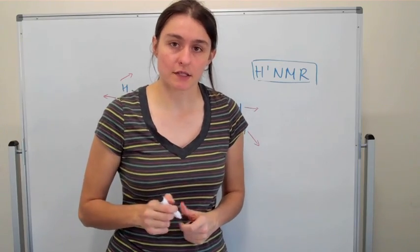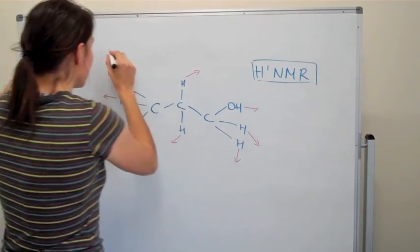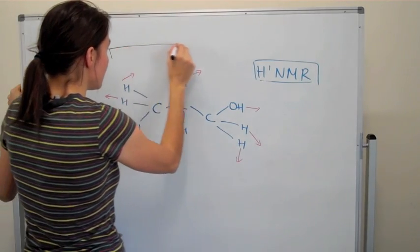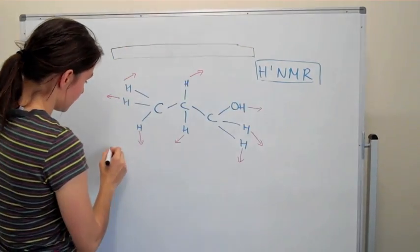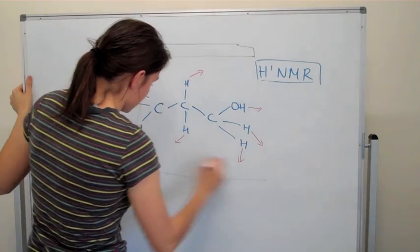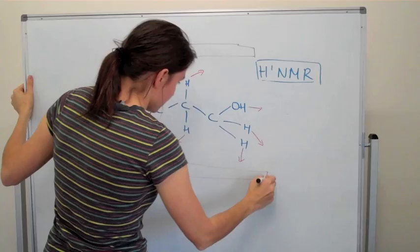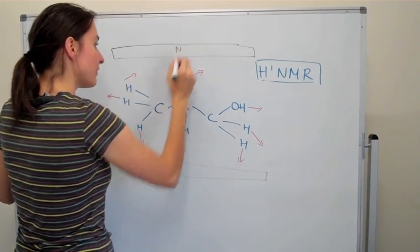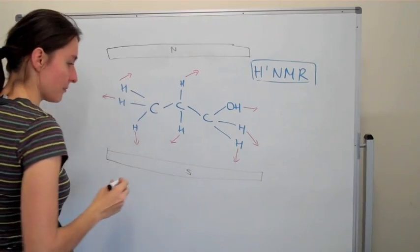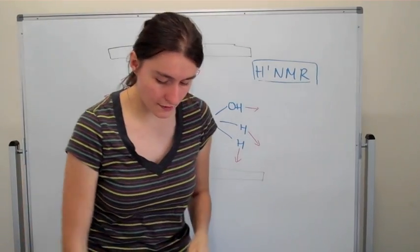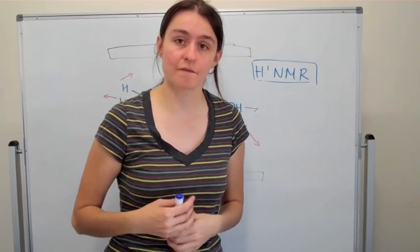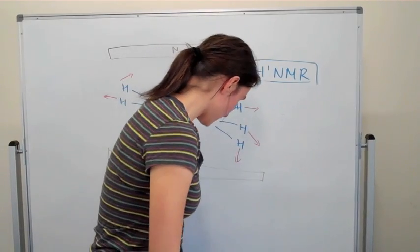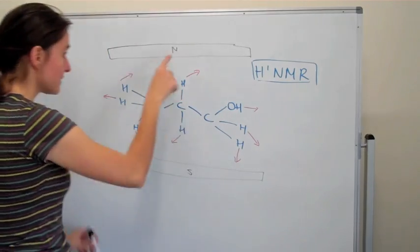So in NMR we take advantage of this. We place in a magnet, an external magnet. This is the north pole of the magnet and this is the south pole of the magnet. Now what that does is basically it creates an external magnetic field that's quite large, quite significant.